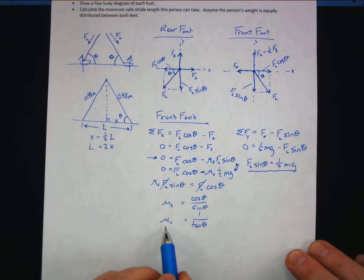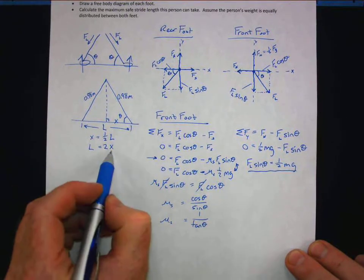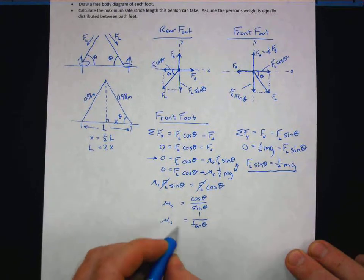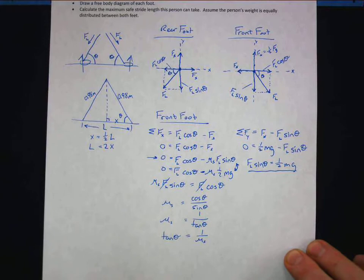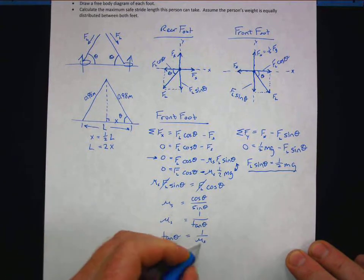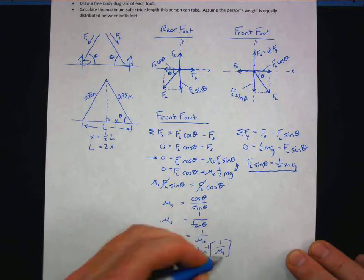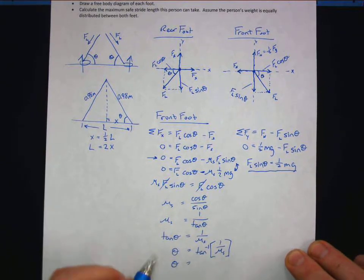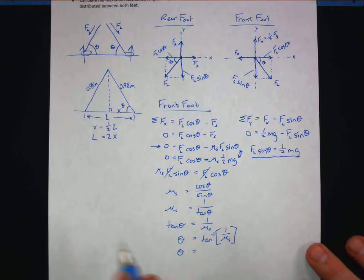It's not the coefficient of static friction I'm after — I want the angle. If I know theta, I know the hypotenuse, can find x, double it, and get the stride length. So: tangent theta equals one over mu_s, which means theta equals the inverse tangent of one over the coefficient of static friction. This angle depends on nothing except the coefficient of static friction — which should remind you of objects on an incline, though the situation is slightly different.